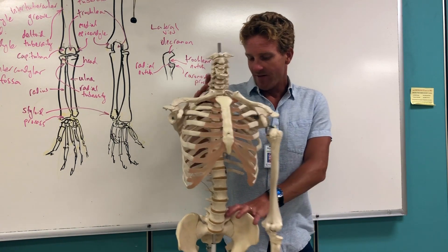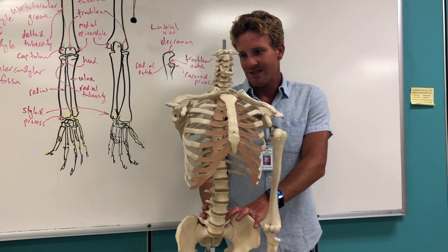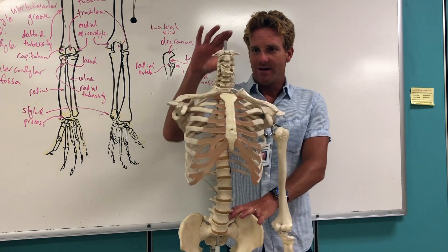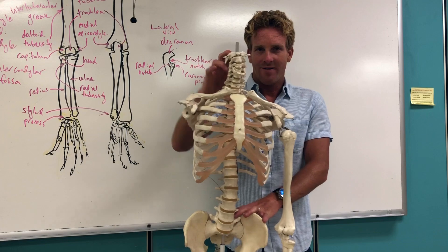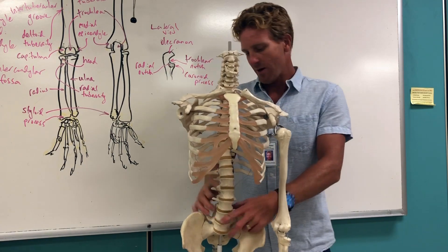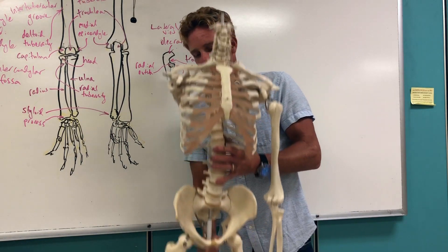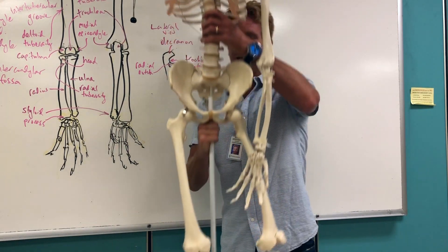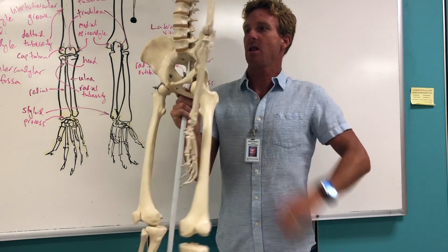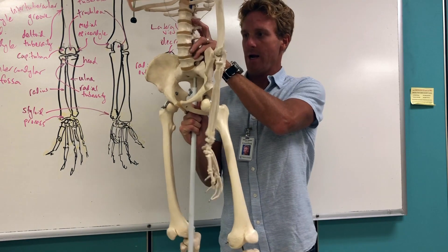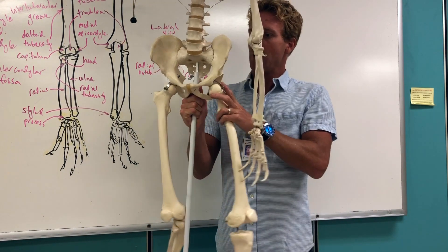The vertebrae extend downwards. You have the cervical vertebrae of the neck, the thoracic vertebrae of the chest or behind the chest, and then the lumbar vertebrae right here.